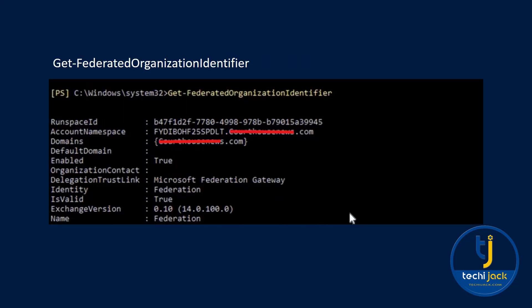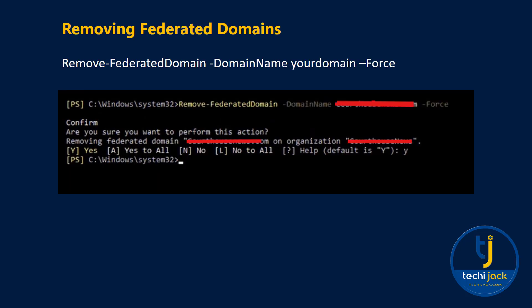We have to get the federated organization identifier. For that, you can run the commandlet Get-FederatedOrganizationIdentifier. Here you will see your domain name, and if you have sub-domains as well, you will see all the primary domains and sub-domains listed here. After getting this information, we will move to the next step.